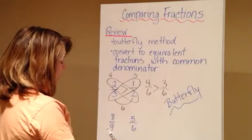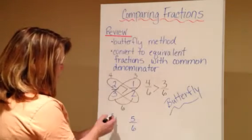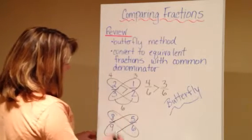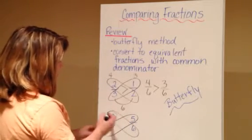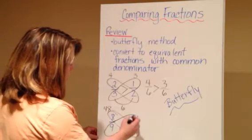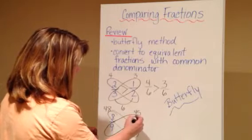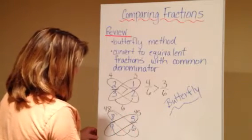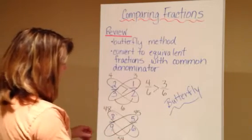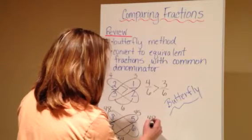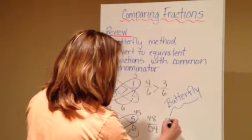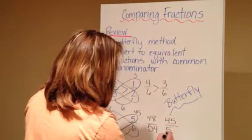Okay, let's do another one. We have eight-ninths and five-sixths. I'm going to draw my loop around this way and this way. Eight times six gives me 48, and five times nine gives me 45, and nine times six gives me 54. So in reality I'm comparing 48 fifty-fourths to 45 fifty-fourths.